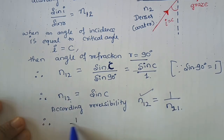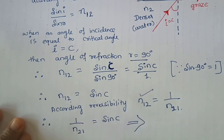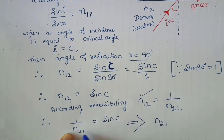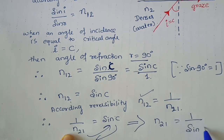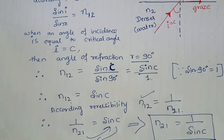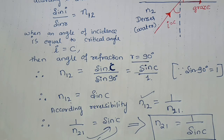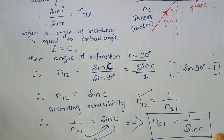Therefore, 1 / n21 = sin C, which implies n21 = 1 / sin C. This is the relation between the refractive index of the medium and the critical angle. You may get a two-mark question on this, or a one-mark question asking you to mention the expression for the critical angle or the relation between critical angle and refractive index. You can simply write this expression.